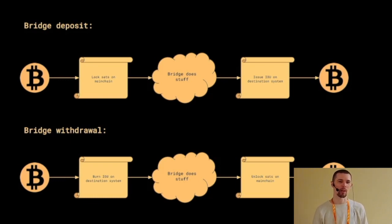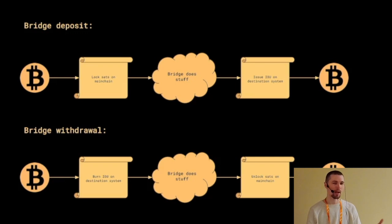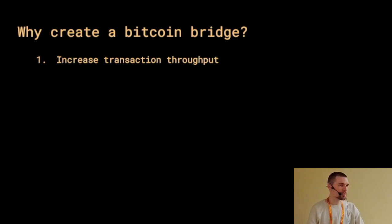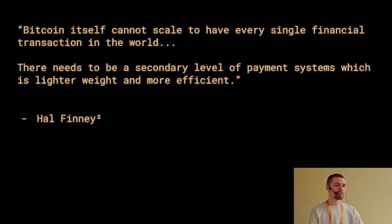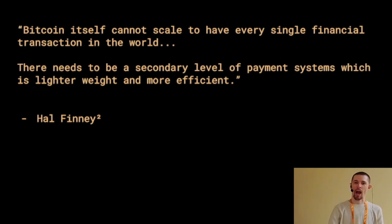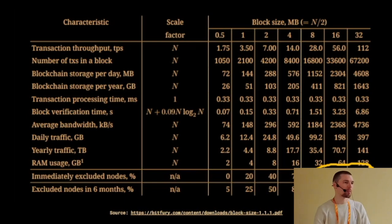The bridge 'does some stuff' is really where all of the differences between different bridge designs comes into play, and I'll describe what that design space looks like currently. But first, why are we even doing this? Why would users give up control of their sats to a bridge? The first reason is we want to increase transaction throughput. Hal Finney said back in the day that Bitcoin itself cannot scale to have every single financial transaction in the world — there needs to be a secondary level of payment system which is lighter weight and more efficient.